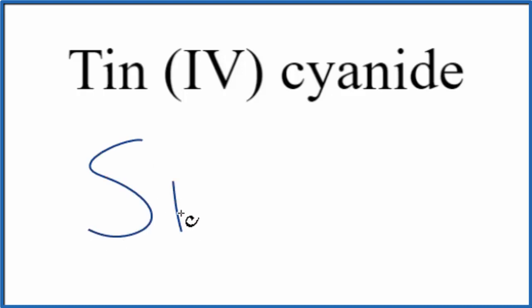Tin is Sn, and this 4 here tells us we have a transition metal, and the charge is going to be 4+. So we have our tin, which is 4+, here.